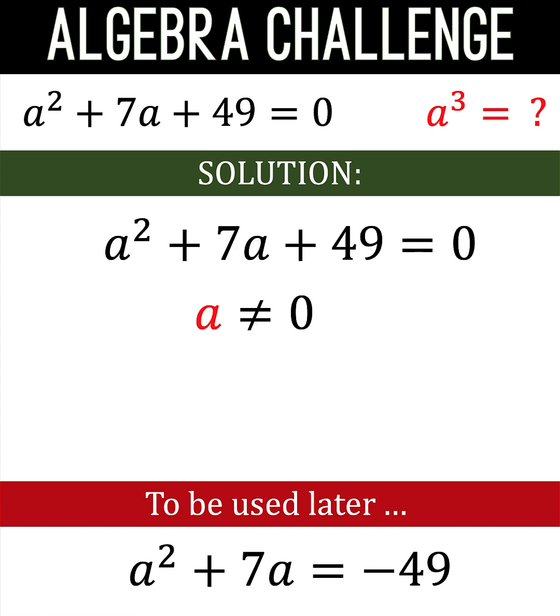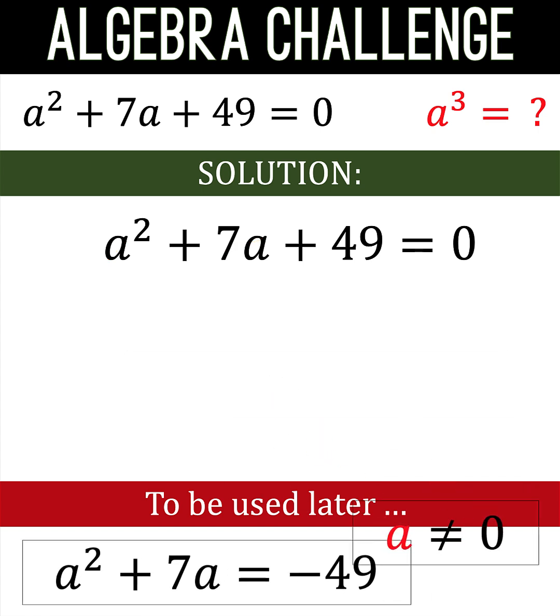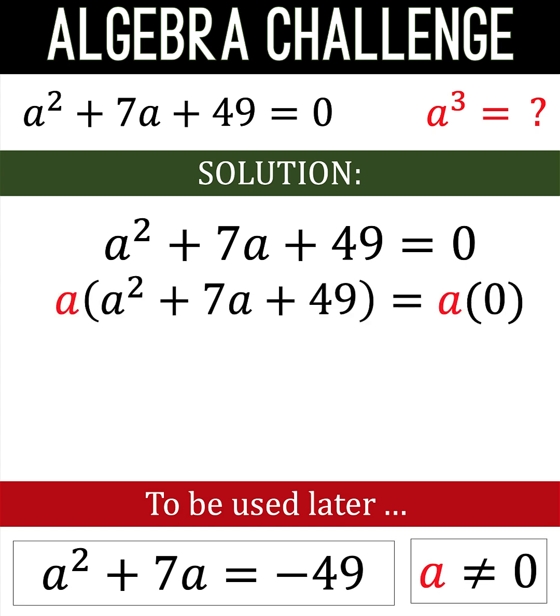Now having established that a is not equal to 0, let's multiply both sides of the equation by a, and let's simplify. We have a times a squared equals a cubed, a times 7a is 7a squared, a times 49 is 49a, the right side is 0.